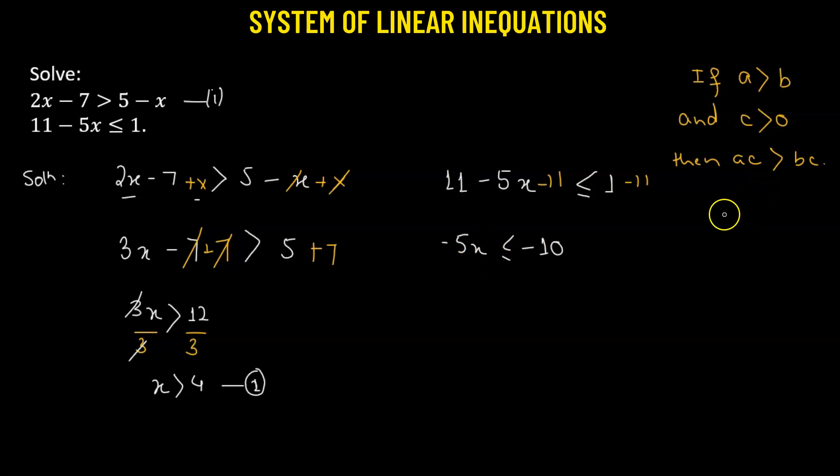But we have to be careful here. We use a property: if a ≤ b and we have a number c which is negative (c < 0),